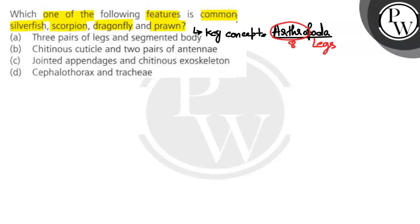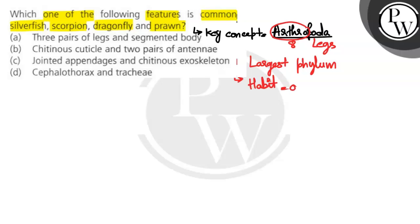Now if we talk about the Arthropoda phylum, it is the largest phylum in the entire animal kingdom. If we talk about the habitat, you will find Arthropoda in every place — in the ocean, in fresh water, and on land. So we can say the habitat is cosmopolitan.